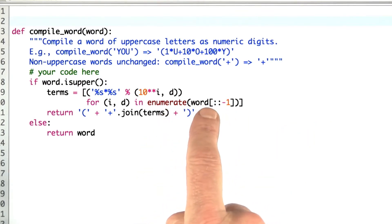Enumerate it, give me pairs of indexes from 0 to n along with the individual digits, and then I'm going to just say 10 to the i-th power and the digit, and that gives us 1 times u plus 10 times o plus 100 times y.